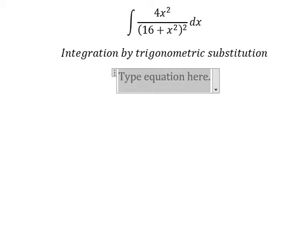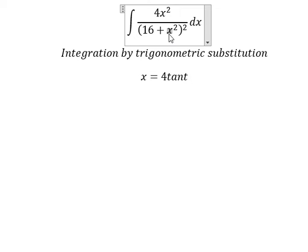I will put x equal to 4 times tan t, because if I put this one, we have 16 times tan squared t. For 16, we can do factorization: 1 plus tan squared t. We change this by secant squared t.